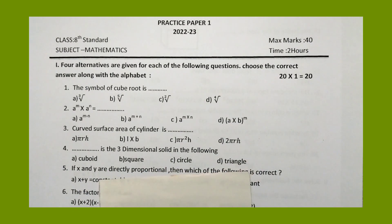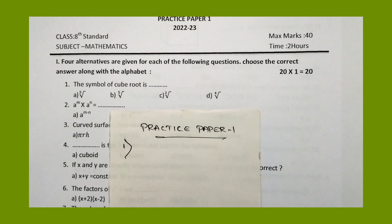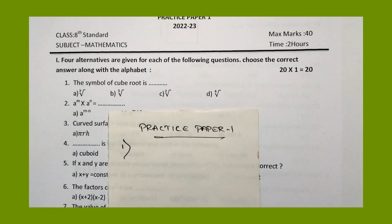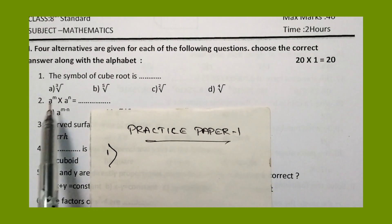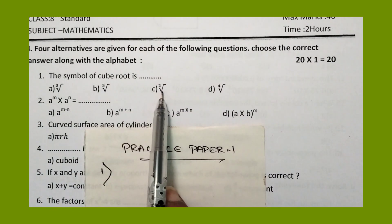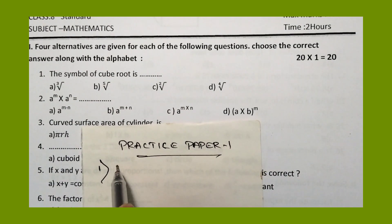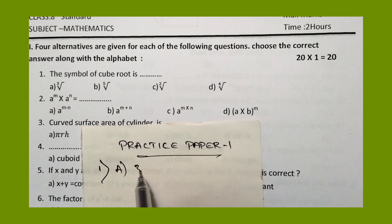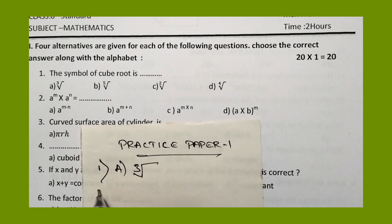First I will solve only the problems related to MCQs. Question one: the symbol of cube root is dash. Among the four options — cube root, fifth root, square root, fourth root — the answer is option A, the cube root symbol.